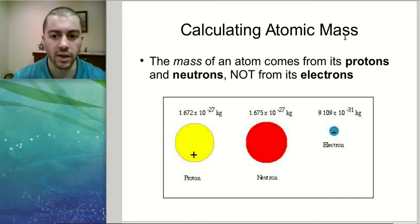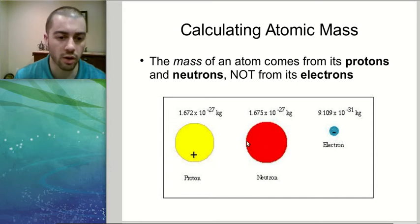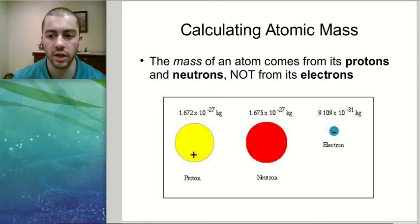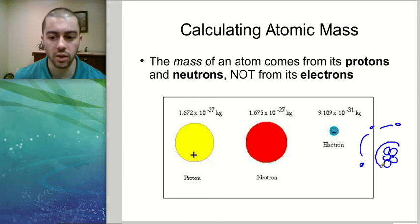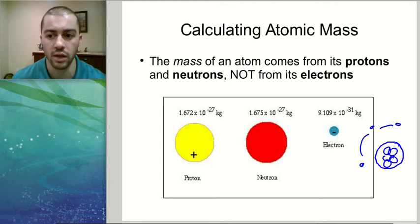If we're calculating the mass of an atom, the important part is that we're not counting the electrons toward the mass. The electrons are so small in comparison to the protons and neutrons that we won't count them. The protons and neutrons are so much bigger, so those are the only things we count toward mass. All of the mass of the atom is concentrated in the nucleus, where all the protons and neutrons are, while the electrons float around on the outside.